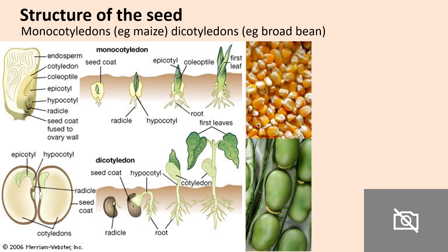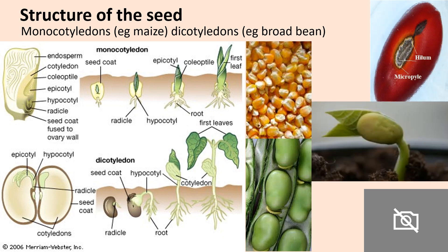You should be able to label a seed and identify key features in monocots versus dicots. You need to be able to identify the hilum on seeds — that's the part where it was originally attached to the fruit. The seed shown here is a dicot because we have two leaves emerging from it. Looking at the maize seed, take a closer look at some of the structures and see if you can add them into your notes.